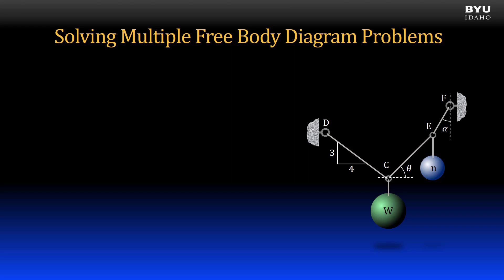For example, the system shown here has two points, C and E, which we could define as particles and construct free body diagrams.